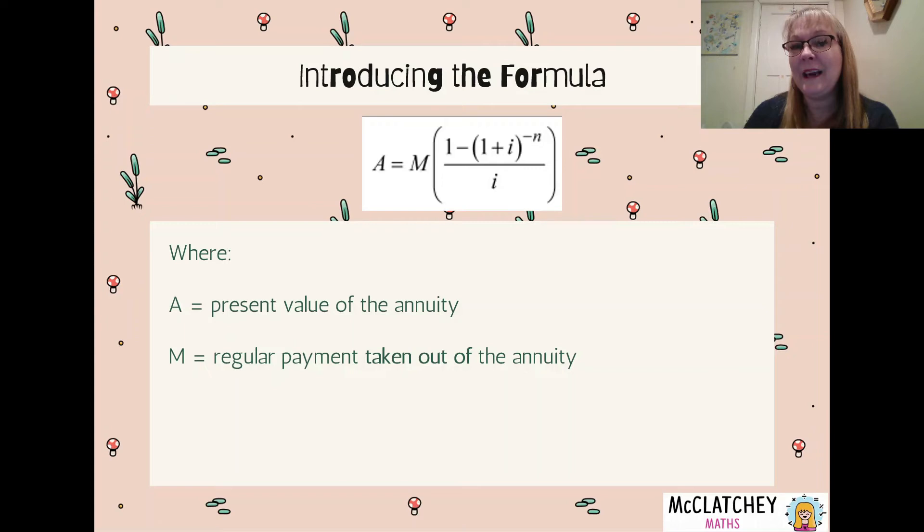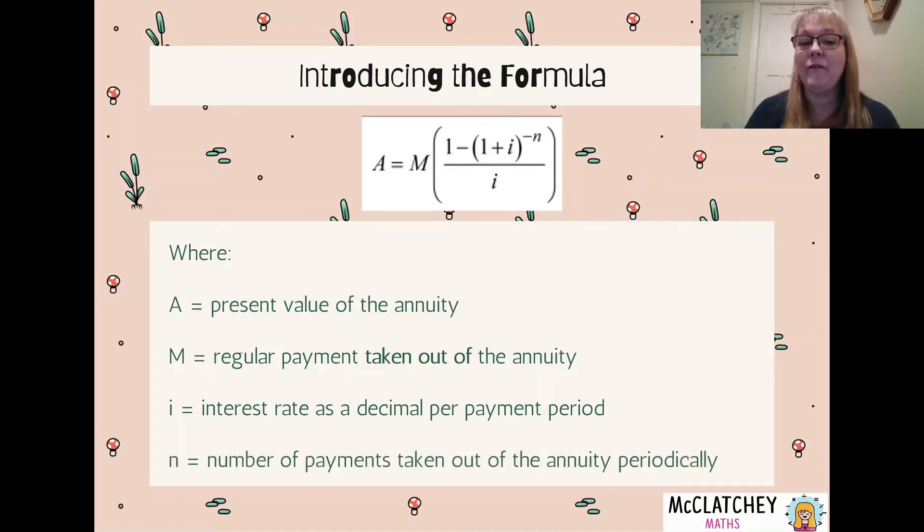We've got M which is a regular payment taken out of the annuity. Now if you remember from our future value video, that's a regular payment put into an annuity. Well with the present value formula we're taking it out of the annuity. There's a few different situations where we actually use this formula and this is one of the main situations. We're also looking at that interest rate as a decimal. So we're going to take that rate per annum, divide it by 100 and then divide it by the number of compounding periods in one year. And then we've got the number of payments taken out of the annuity periodically, which is the total number of payments, which is the number of payments in one year multiplied by the number of years.